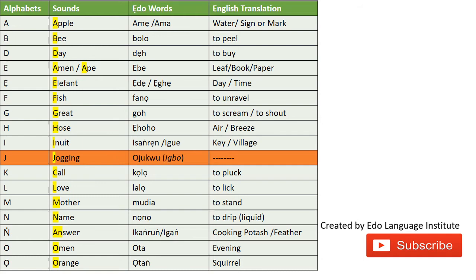So 'KOLAB' means to pluck a leaf. L is 'LA' or 'LAW' meaning to leak. For the M sound, we have 'MUDIA' meaning to stand. For the N sound, 'NONO' means to drip — so when talking about liquid like water: 'NONO' — the water is dripping.